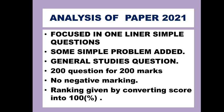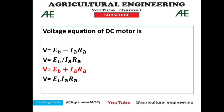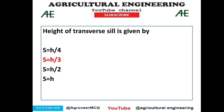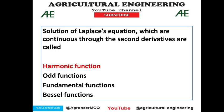The first question was: the voltage equation of a DC motor is — the correct option was option 3: Eb plus Ia × Ra. Next, the height of transverse seal is given by s = h/3. Then, solutions of Laplace equations which are continuous through the second derivatives are called harmonic functions — option 1 is correct.